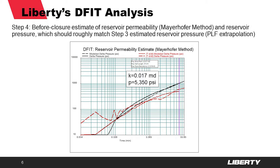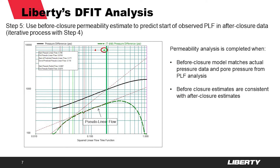We also extrapolate with that model the reservoir pressure, and that reservoir pressure has to be roughly in line with the reservoir pressure previously estimated from the pseudo-linear flow extrapolation. In this case the permeability is about 0.017 millidarcy. The next step is to verify that before-closure permeability estimate with the after-closure data, kind of as an independent confirmation, because the before-closure analysis technique can be fairly non-unique.